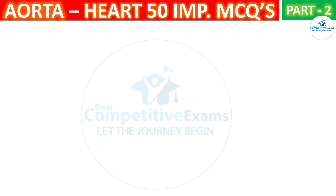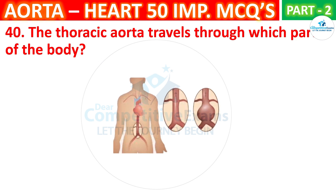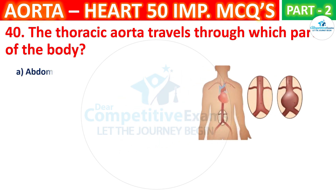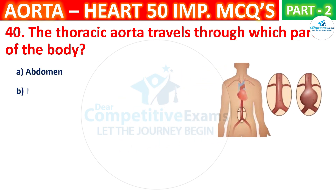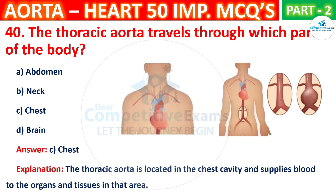Question No. 40. The thoracic aorta travels through which part of the body? The options are: Abdomen, Neck, Chest, or Brain. The correct answer is C, that is chest. The thoracic aorta is located in the chest cavity and supplies blood to the organs and tissues in that area.